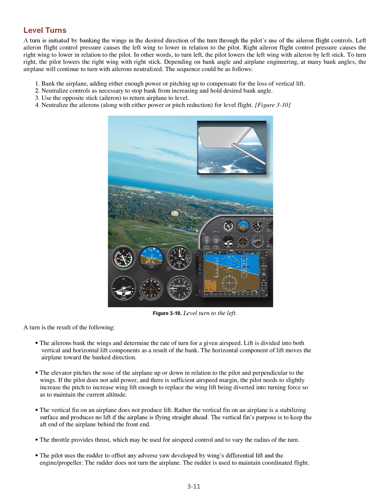The sequence could be as follows: 1. Bank the airplane, adding either enough power or pitching up to compensate for the loss of vertical lift. 2. Neutralize controls as necessary to stop bank from increasing and hold desired bank angle. 3. Use the opposite stick (aileron) to return airplane to level. 4. Neutralize the ailerons, along with either power or pitch reduction, for level flight.